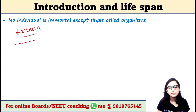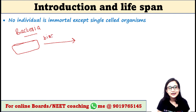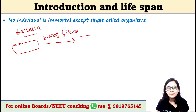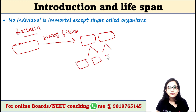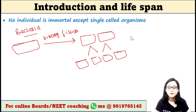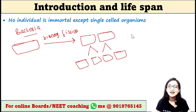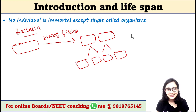Here we have bacteria. It reproduces by the process of binary fission, so it simply becomes 2 from 1 since it is a single-celled organism. Again these 2 cells will become 4. That means they will never die naturally. Now if you add a drug or something else, that's the exception. Hence we say that single-celled organisms are immortal.